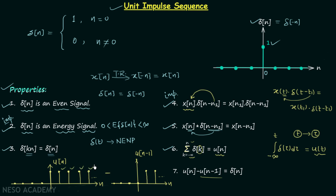When we subtract the two waveforms, the samples at n equals 1, 2, 3 and so on cancel out, as do the samples at negative n values. The only non-zero value remaining is at n equals 0, which equals 1. All other values are 0, and this is exactly delta[n].